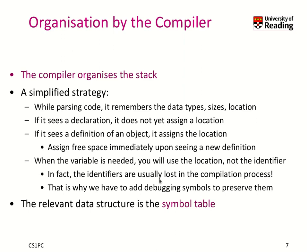In fact, identifiers are lost in the compilation process of C. That's why we have to add debugging symbols to preserve them. The compiler uses something called the symbol table to make this mapping and assignment — a data structure for efficiently looking up the name of an identifier and its types, and also to modify them.